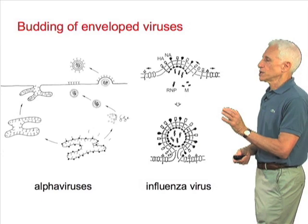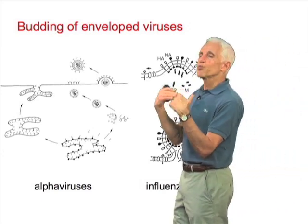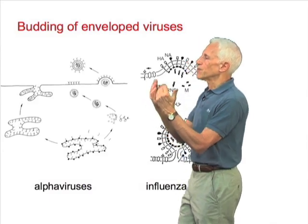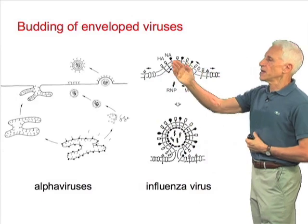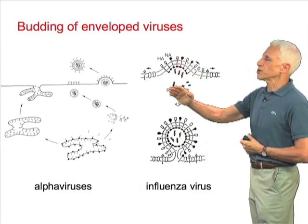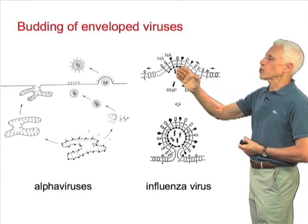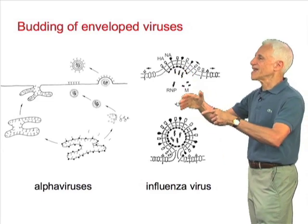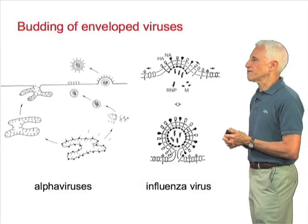In other cases, such as influenza, there's no preassembled inner particle. Rather, the assembly occurs at the membrane, where the inner structures and the glycoproteins that incorporate into the membrane come together as part of the elaborate budding event.